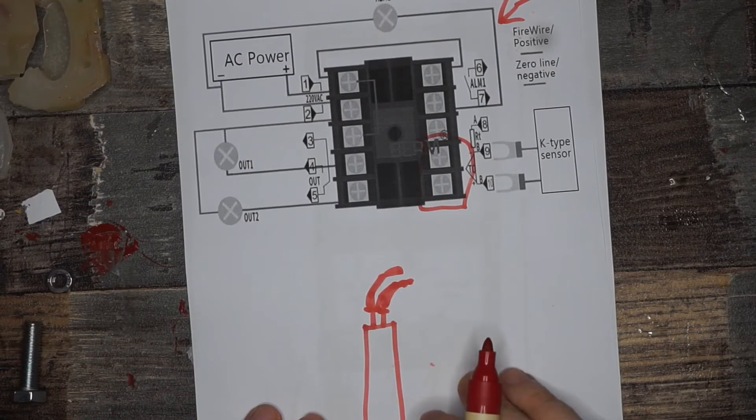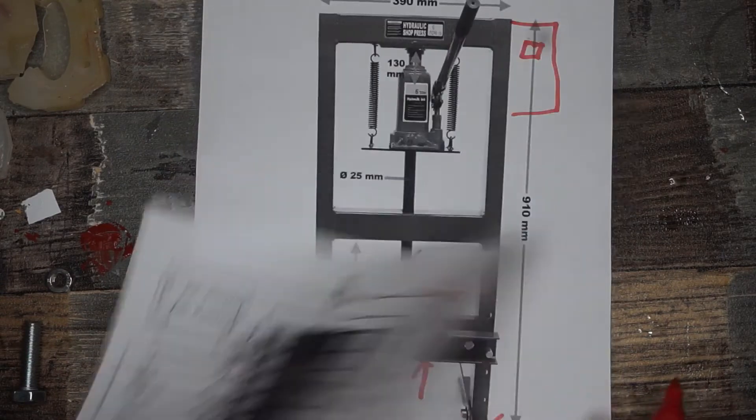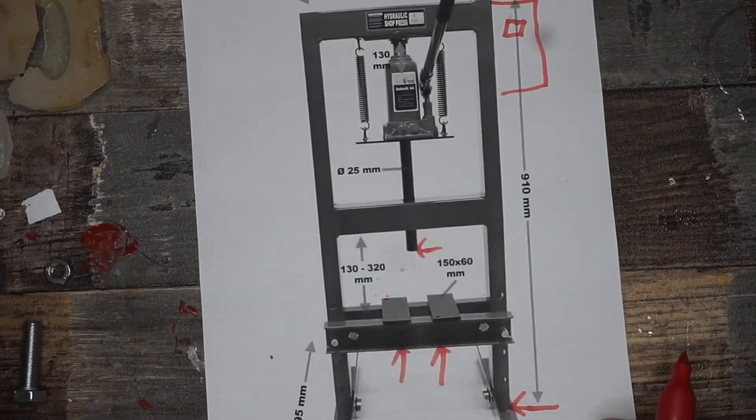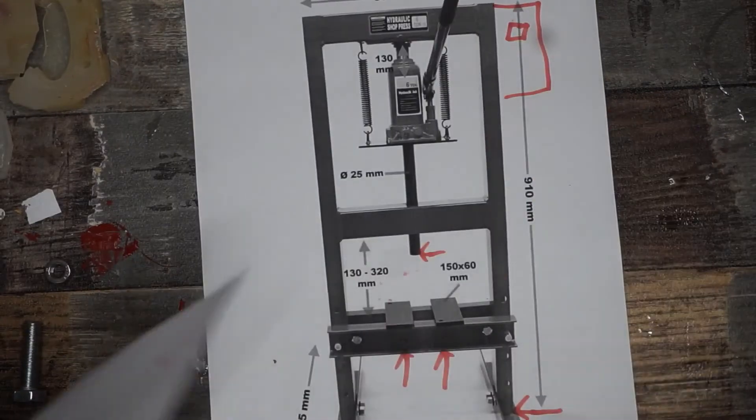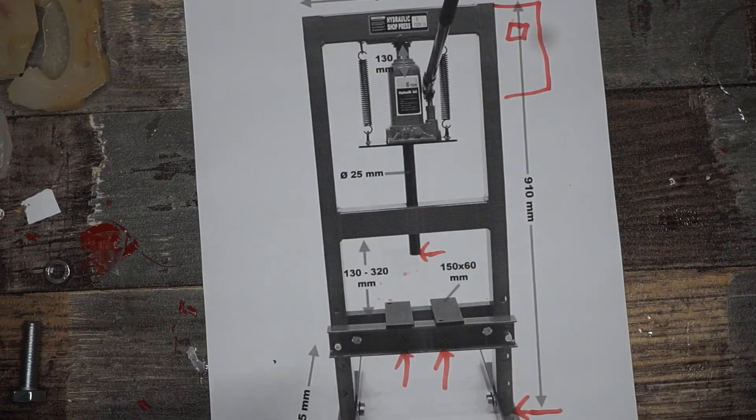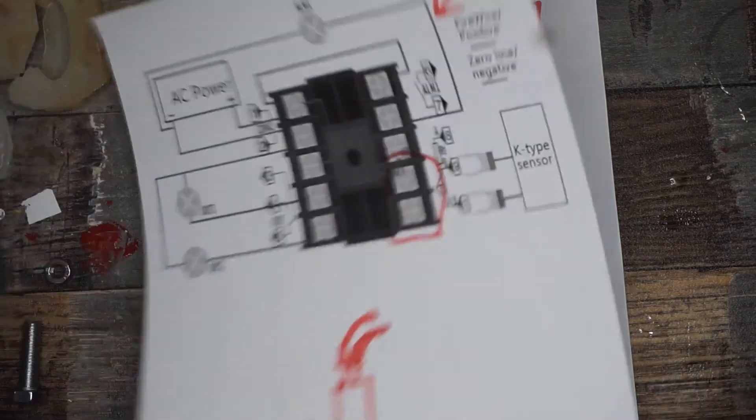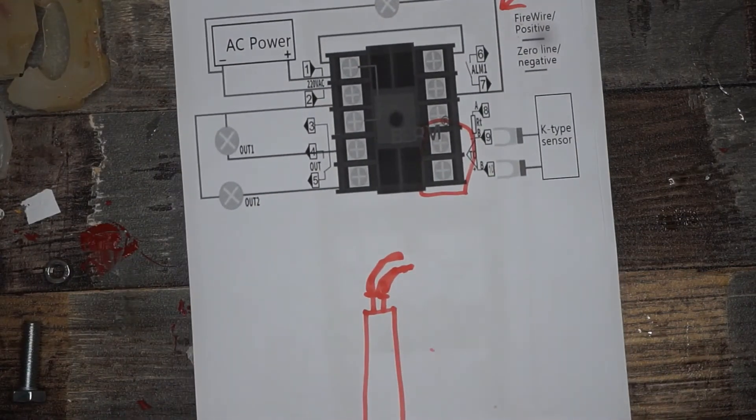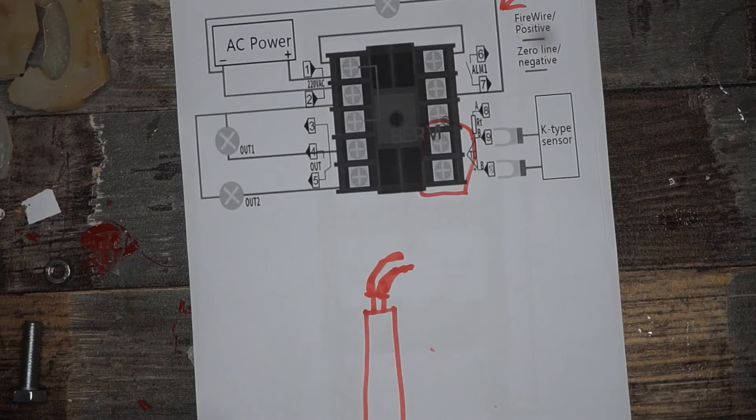You don't want to have the AC power touching the frame of the press. Because the press is completely metal. I mean it has paint on it so it's not that conductive. But you don't want to risk anything when working with AC power.